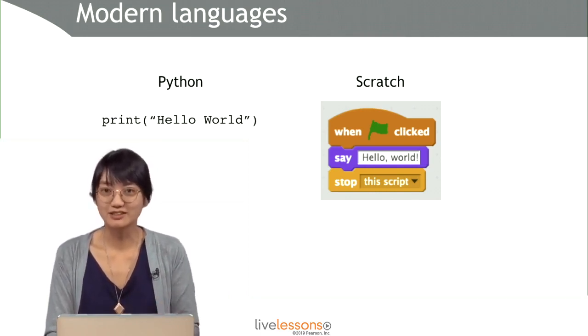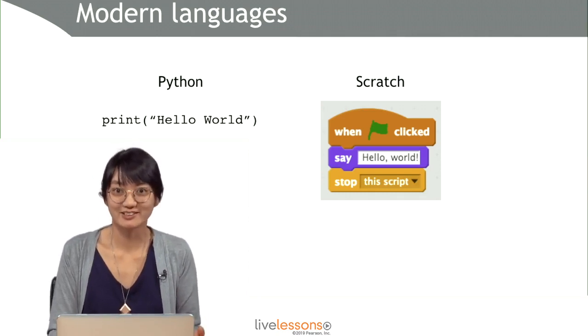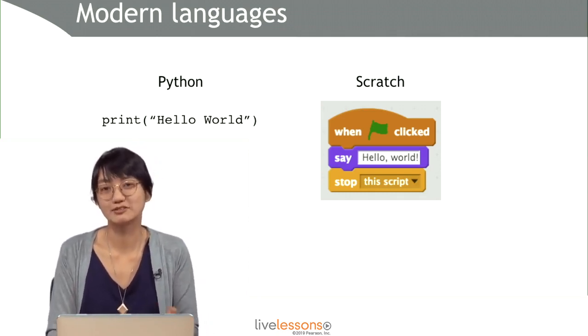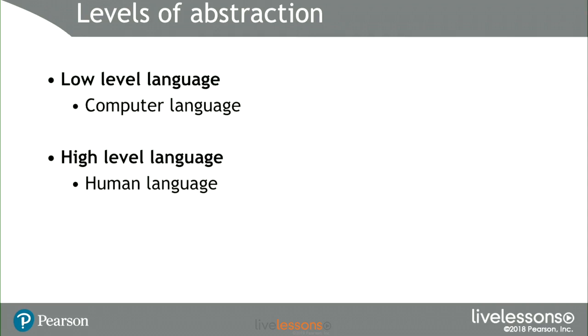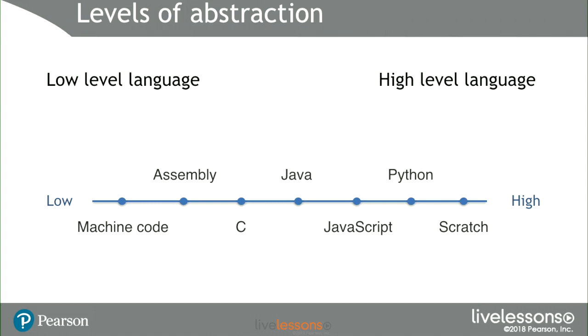Scratch is a visual drag-and-drop language — very easy to understand what it's going to do. In computer science, there's this idea of levels of abstraction: low-level languages are closer to computer language, and high-level languages are closer to human language, making it easier for us to tell a computer what to do. Here's a rough outline of where some different popular languages fall on this level of abstraction continuum.